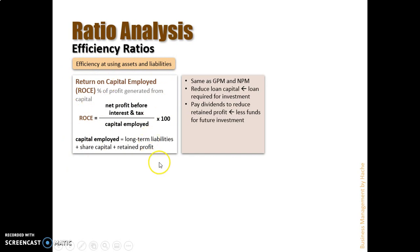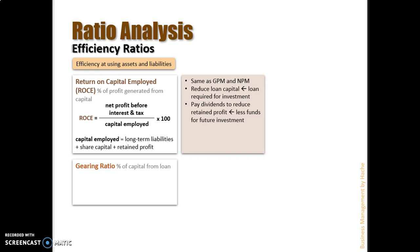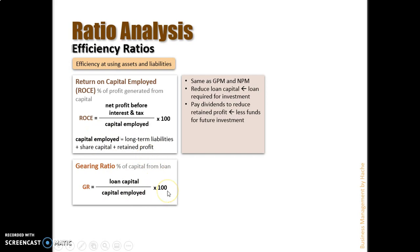The other similar calculation on efficiency is the gearing ratio, which is a percentage value that tells us what percentage of the capital employed comes from loan capital — from debt. As mentioned, the capital employed is made up of three elements: loan capital (a long-term debt to invest in the business), share capital (money invested by the owners), and retained profit (accumulated profit from every year's activity). The gearing ratio is calculated by dividing the loan capital by the capital employed, times 100, giving you the percentage of capital employed that is loan capital.